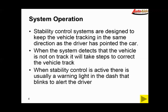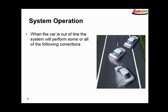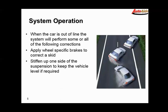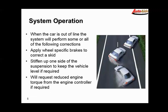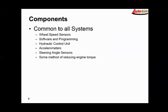When the car is out of line, the system will perform some or all of the following: it will apply real specific brakes to correct the skid. On some vehicles it may stiffen up one side of the suspension to keep the vehicle level if required, and it will generally request some kind of reduced torque from the engine controller via some kind of communication circuit, either a CAN bus or dedicated communication lines between the anti-lock controller and the PCM.